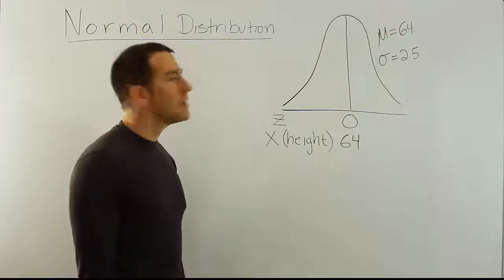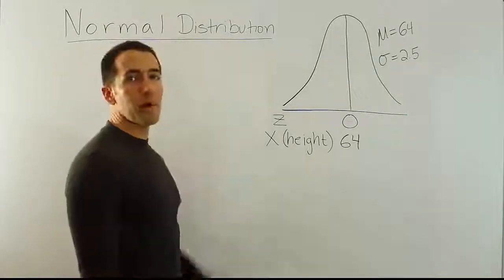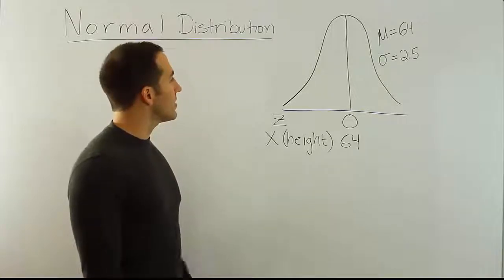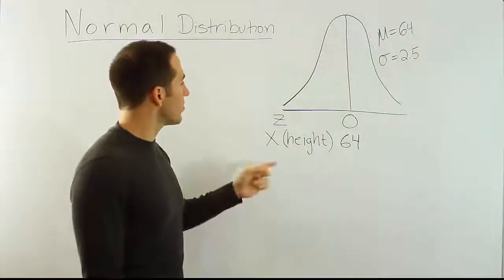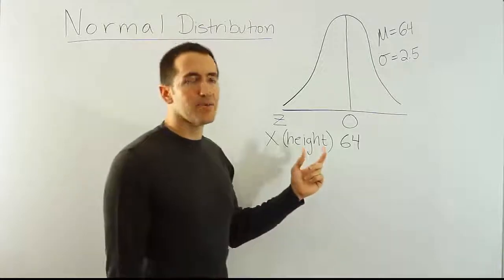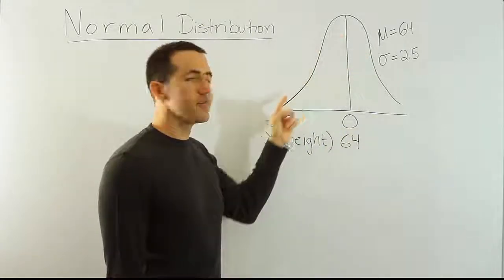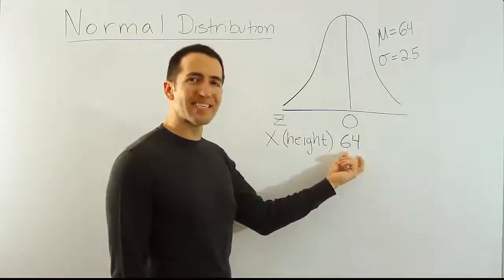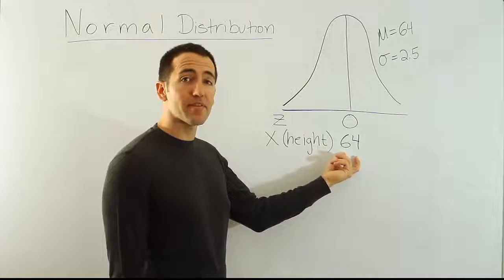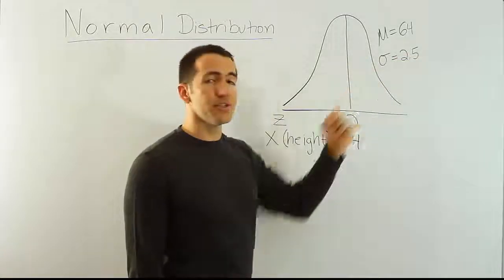Okay, so we're talking about the bell curve again. We're doing normal distribution problems. These are problems that deal with phenomena that has a bell-shaped distribution. The example we're working with here is female heights. We're going to say female heights are normally distributed, therefore the heights fall along the bell curve. The average height for women is 64 inches tall, or about 5'4", and the standard deviation is 2.5.